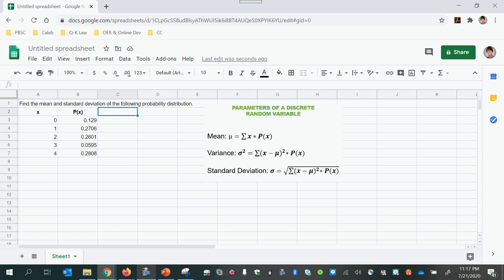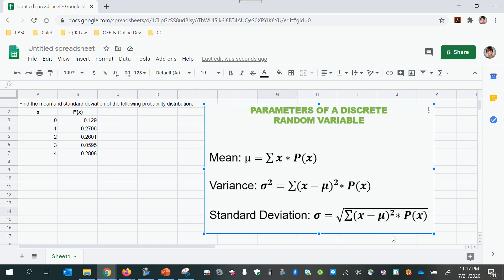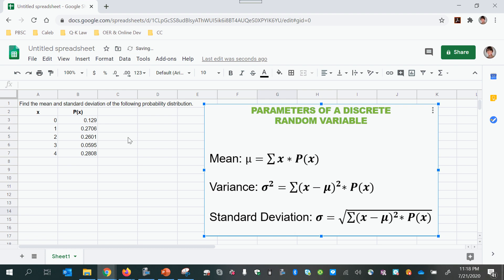In this video we're going to learn how to calculate parameters of a discrete probability distribution using these formulas given here. I'll be showing this with Google Sheets which is a Google version of Excel basically.